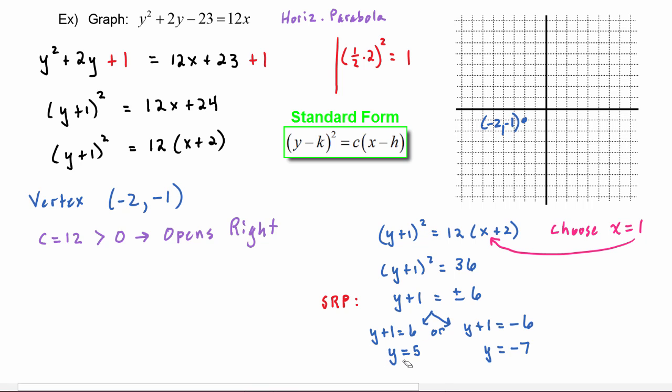So remember these are two different y values, both of them came from having an x value of one. So the points that we get from this are (1, 5) and (1, -7). So let's plot those points. We have one, five, and we have one, negative seven.